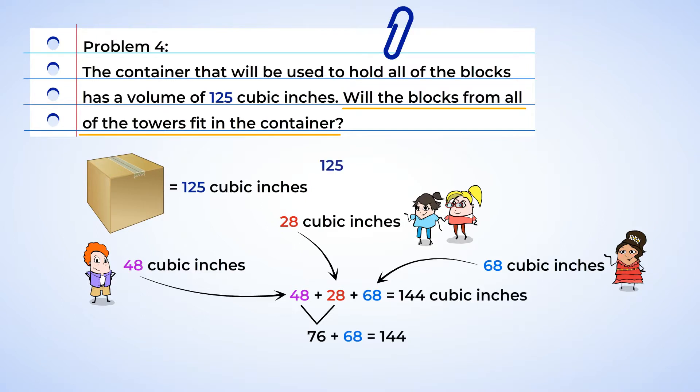Well, since 125 is less than 144, all of the blocks won't fit into that one container. And it looks like we're going to have to get another container. And that means we'll have extra space for an extra tower. Excellent.